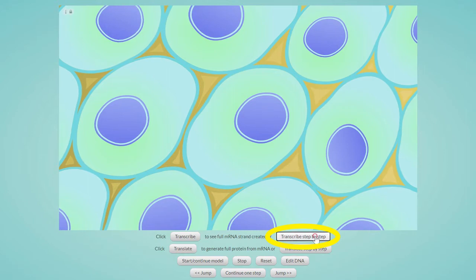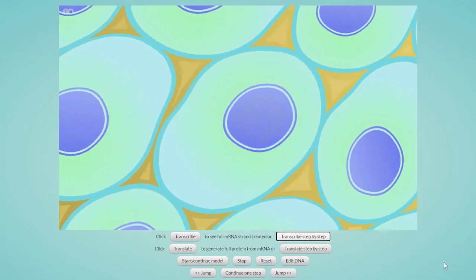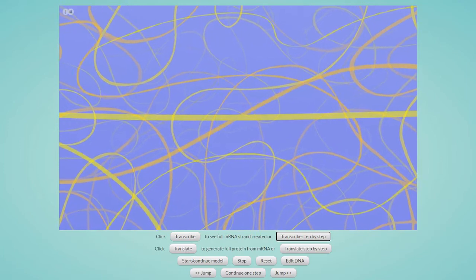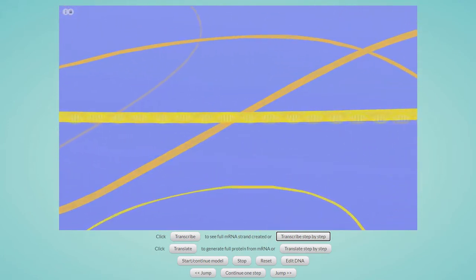When I click on the button, we zoom into the cell, then the cell nucleus. Now we see yellow-orange ribbon-like material that represents the DNA, and then the double helix structure.